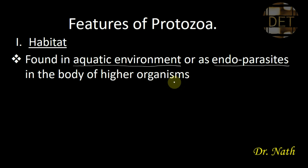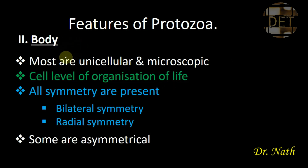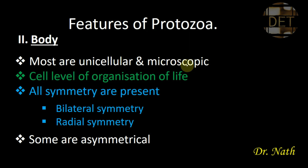The next category is the body feature. Here we want to describe how the body of Protozoa looks. The first thing to know is that most Protozoa are unicellular and microscopic. Unicellular means they are made up of one cell, and microscopic means they cannot be seen with the naked eye but with the aid of a microscope. Some of them are multicellular, but they are very few.